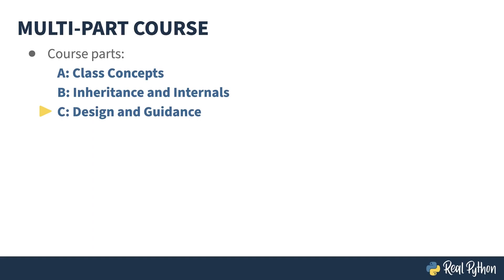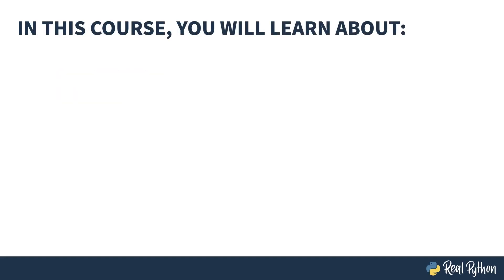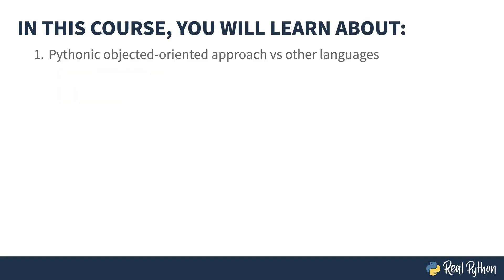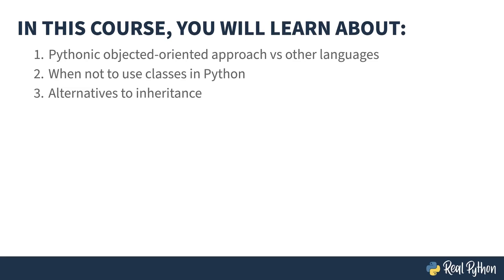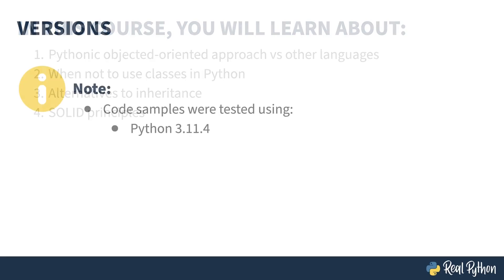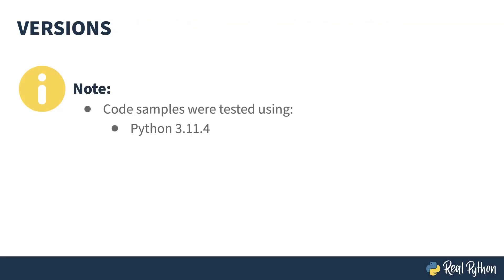This third part of the course teaches you about how the Pythonic object-oriented approach compares to other languages, when not to use classes in Python, alternatives to inheritance, and the SOLID principles. The code in this course was written with Python 3.11. Object-oriented coding in Python has gone through some changes over the years, so the code presented here won't work in Python 2 without being altered.